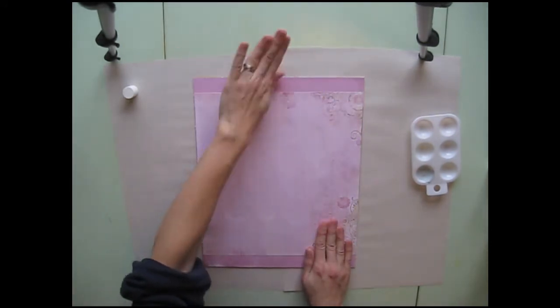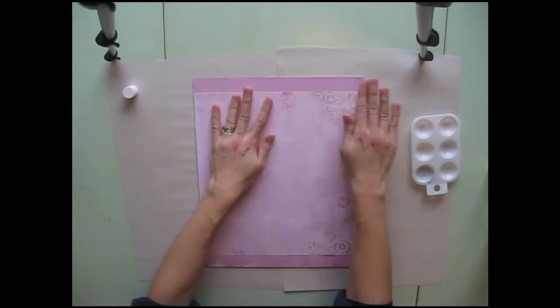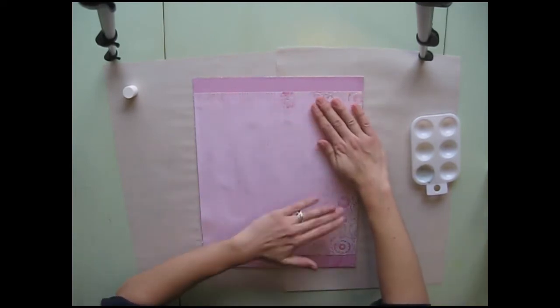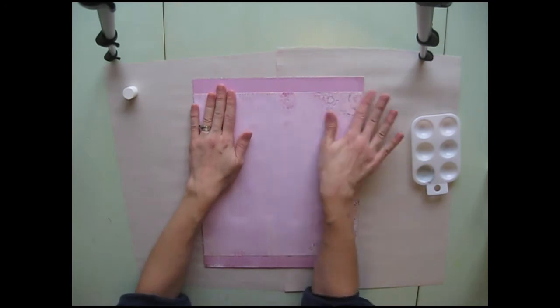And just smooth it out. It doesn't have to be perfect. Mine's a little wrinkly, you can kind of see where the glue stick was, but when it's finished you're really not going to notice.